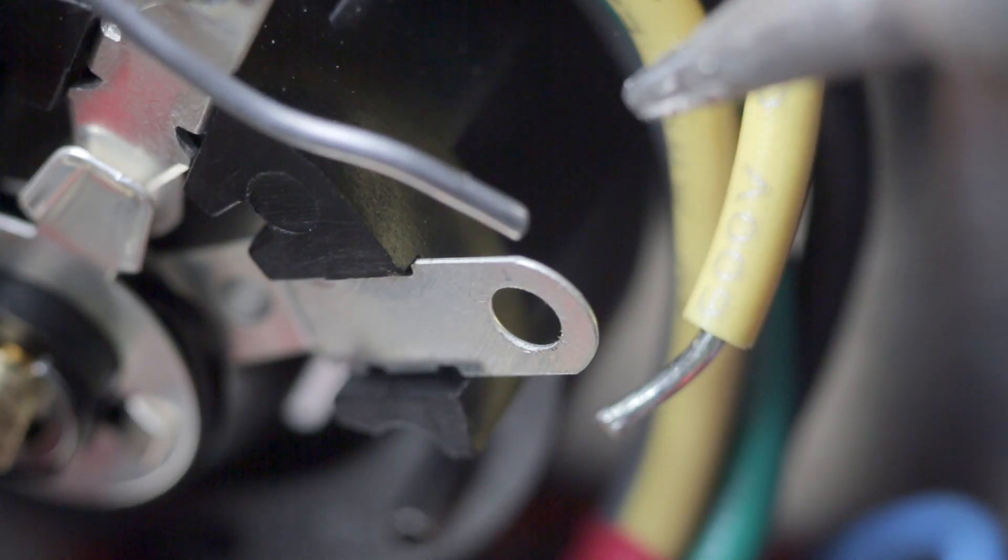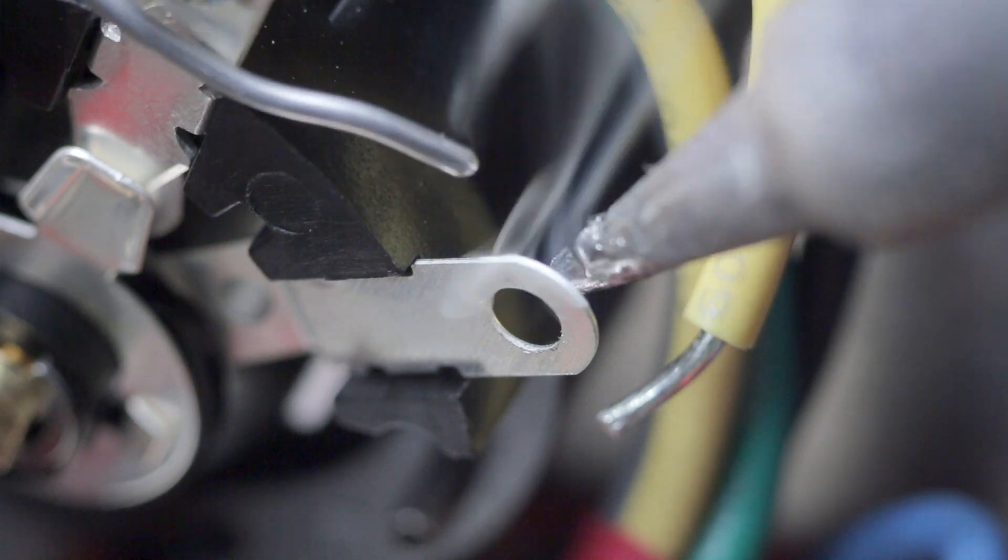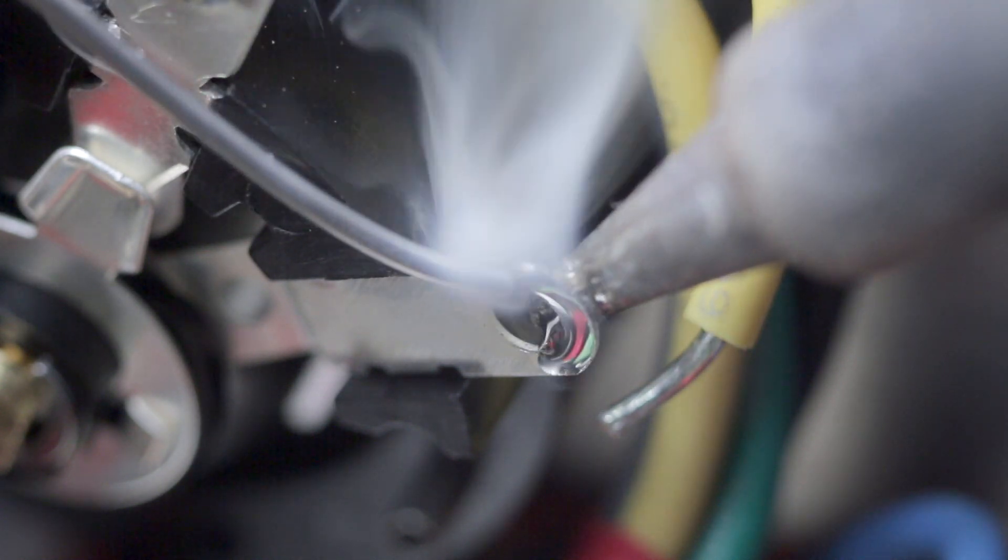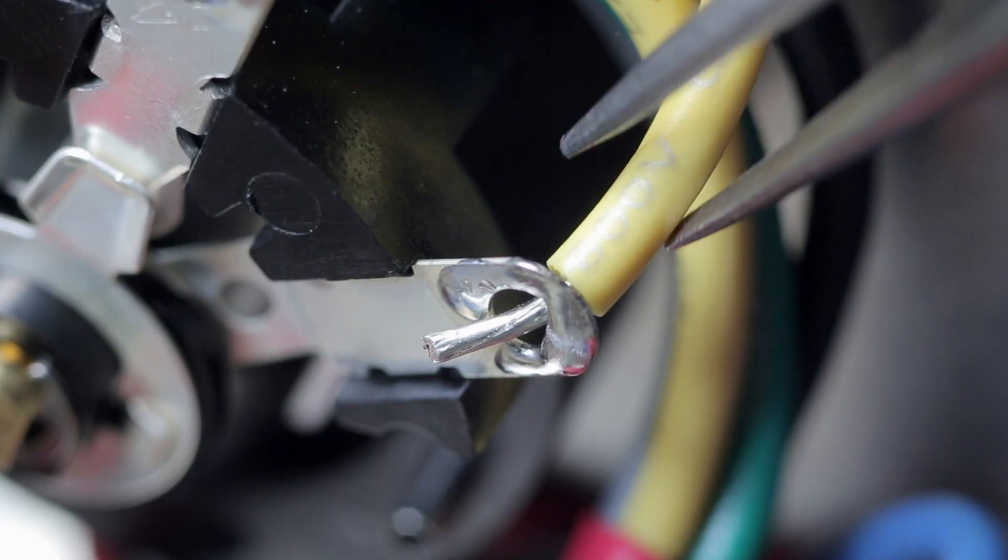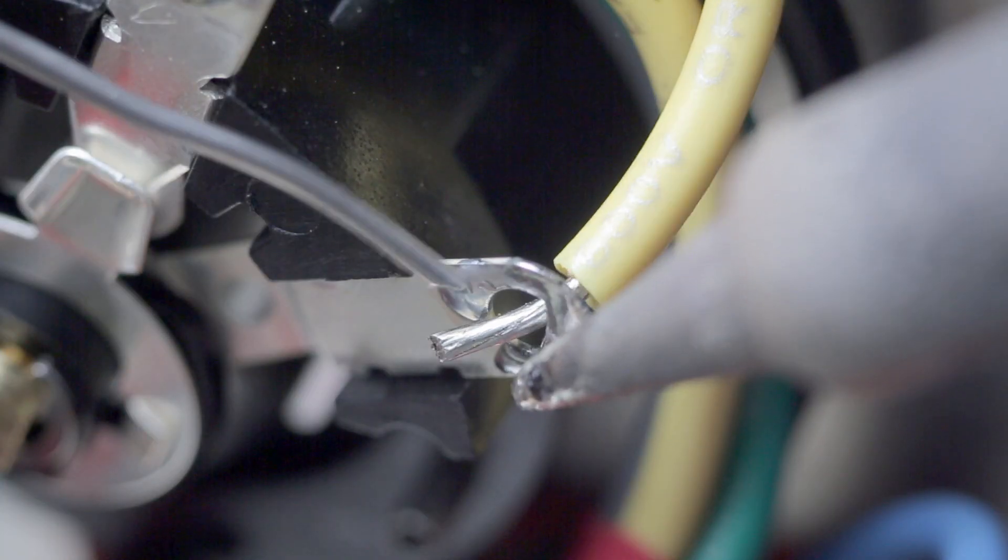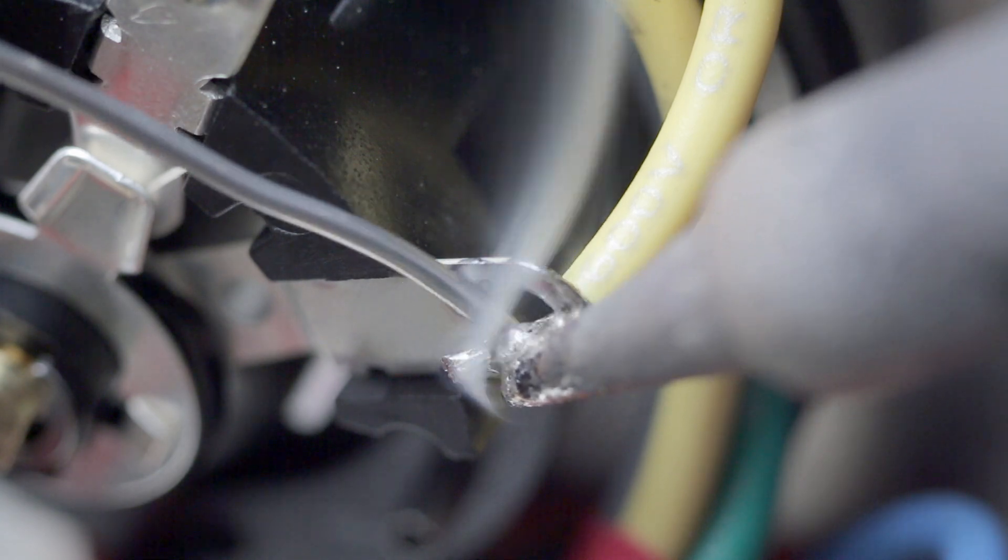For whatever reason the common terminal of the ohm selector switch is thinner than the others and so extreme care is needed. It transfers a lot of heat quickly to the plastic and you don't want to melt it.